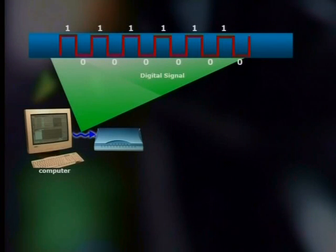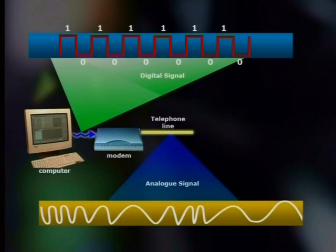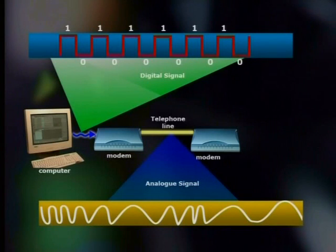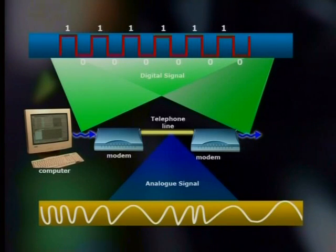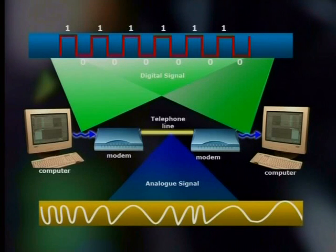These are like two different languages. The computer can't speak telephone and the telephone can't speak computer. Something has to act as a translator for them. This is where the modem comes in. So, if you send an email to your friend, that email starts as a digital signal from your computer. This digital signal is changed by your modem into an analog signal that is then sent over the phone lines. At the computer on the other end, there's another modem. This receives the analog signal from the telephone line and converts it into a digital signal which is inputted into your friend's computer. The computer processes this signal and your friend can now read your email.